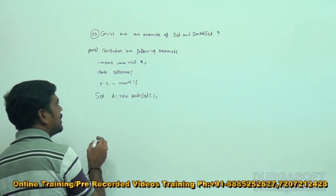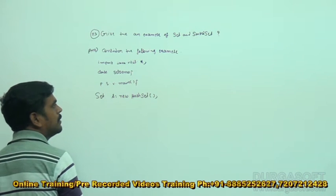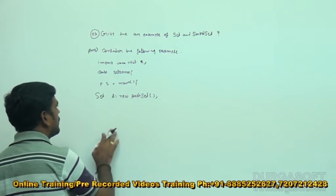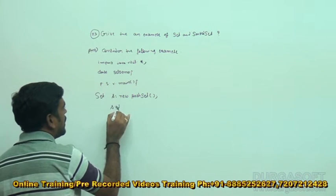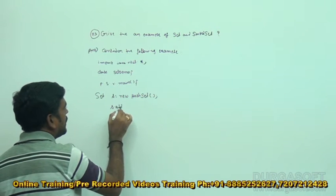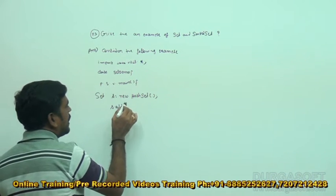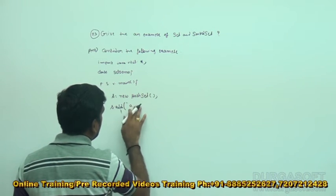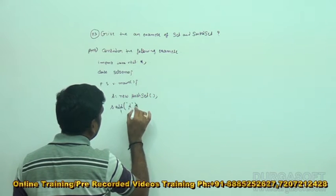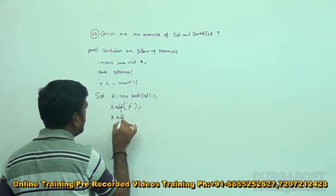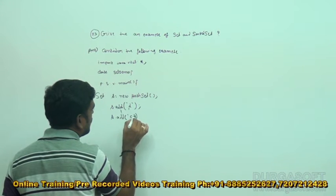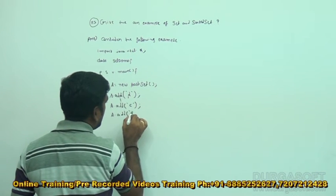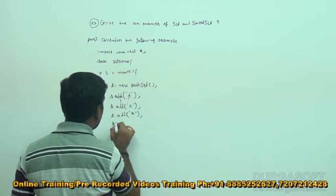After that we can add the elements. How to add the elements — like this: S dot add. Add is the method given by the Set. Now we can add like this. First here I am taking D. The next S dot add A.